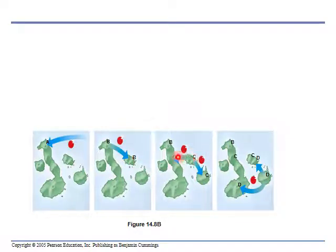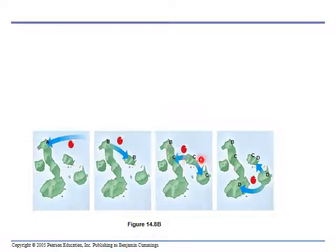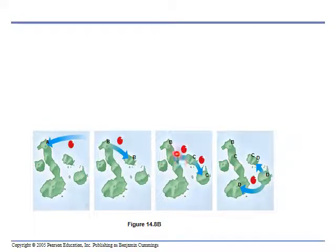C gets pushed back, but C no longer breeds with B. They have become individual species — they will not breed, won't hybridize, won't mix. They've become totally new species, so you end up with B and C. Then C jumps to another island and becomes D, a different species, and gets pushed back. On islands, you can end up with many different species — in this case, B, C, and D.